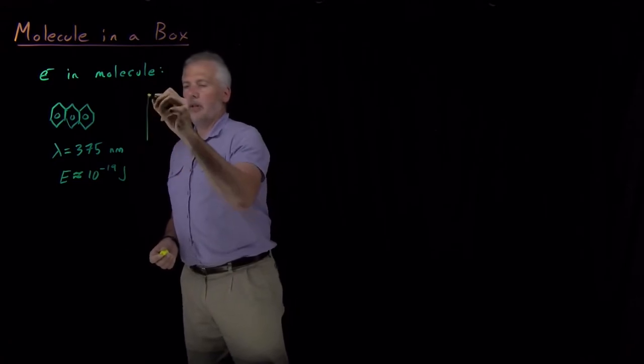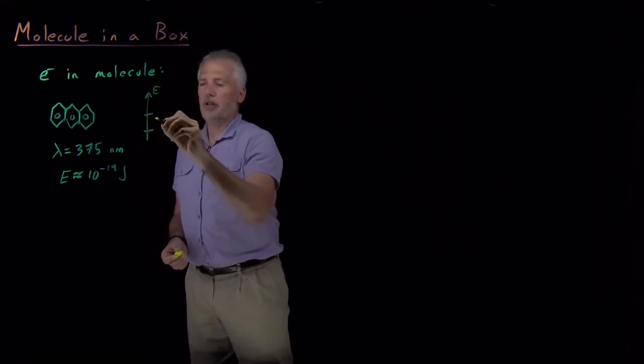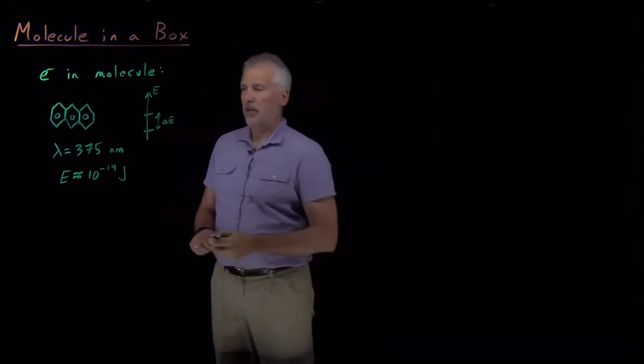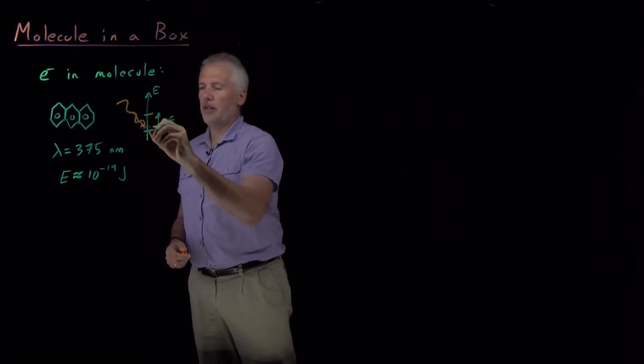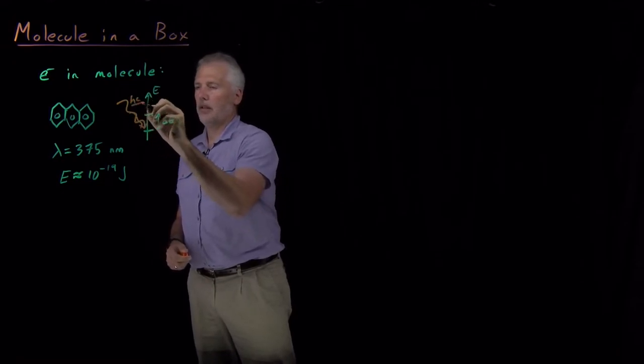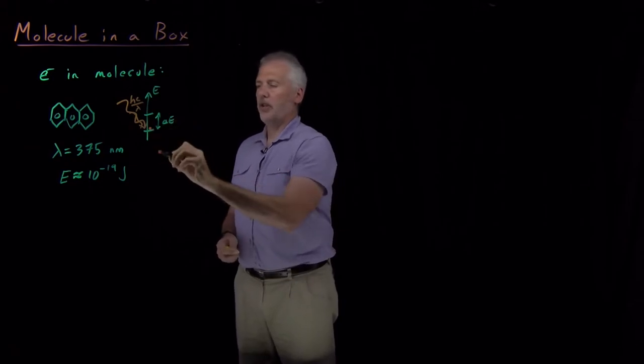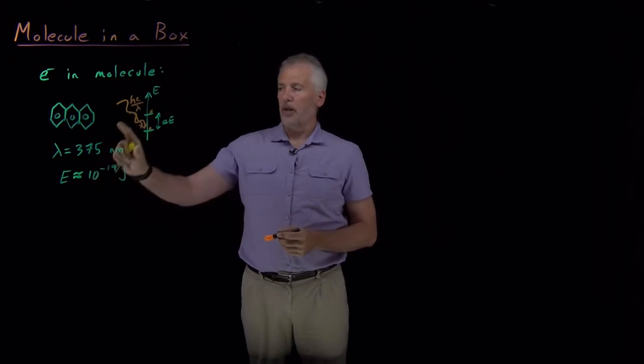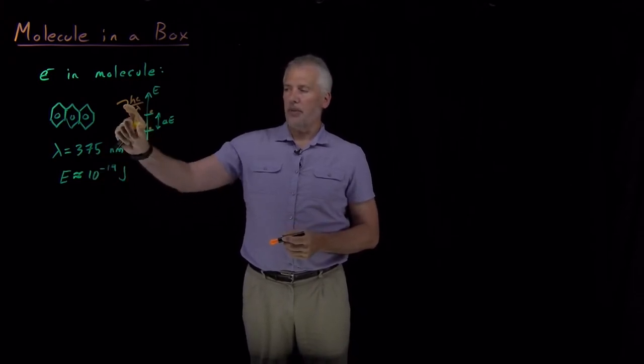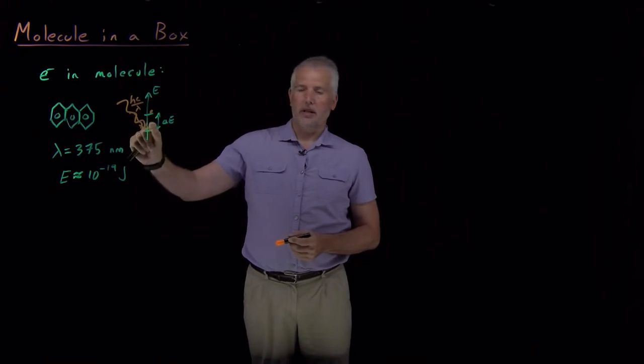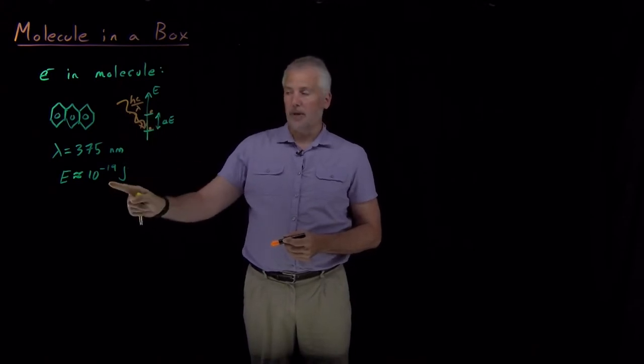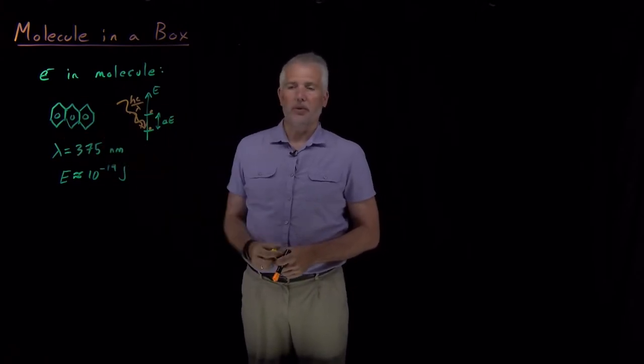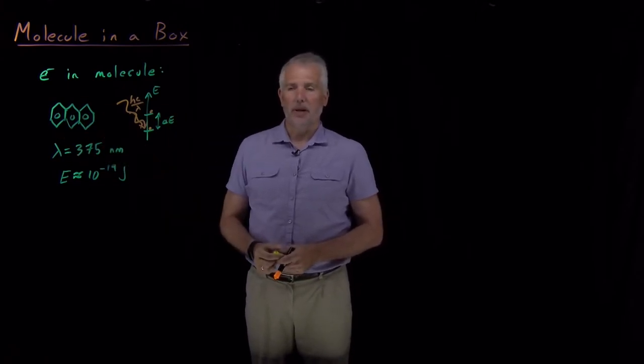Remember that that corresponds to there's a pair of energy levels separated by this much energy. And then when I shine a photon with the same amount of energy, it can excite the electron from the lower energy level up to the upper energy level. So a photon with 375 nanometers has this much energy, it's enough to excite the electron between a pair of states that differs by exactly that much energy, and those correspond to states that we can predict reasonably well with the two-dimensional particle in a box model.